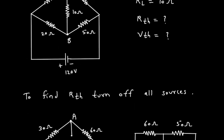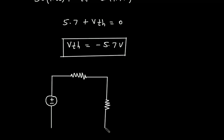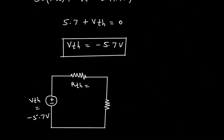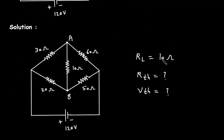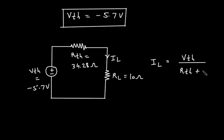From these values we can draw the Thevenin equivalent circuit. The Thevenin equivalent circuit consists of VTH in series with RTH and RL. VTH = −5.7 volt, RTH = 34.28 ohm, and RL = 10 ohm. We now find IL using the formula: IL = VTH / (RTH + RL).